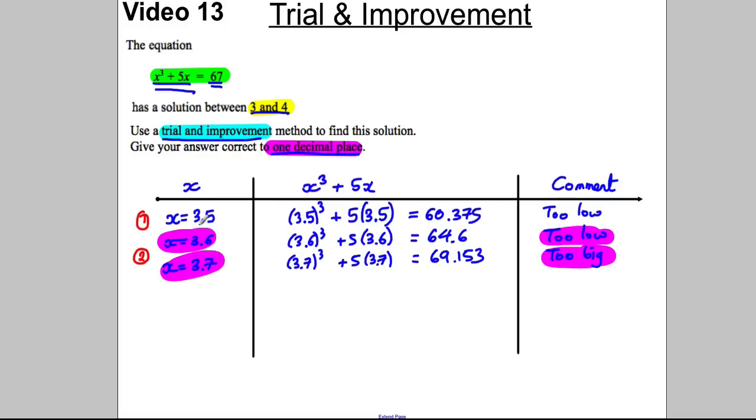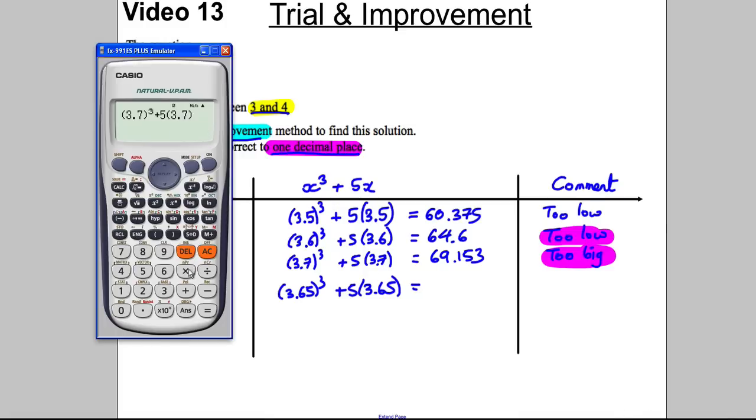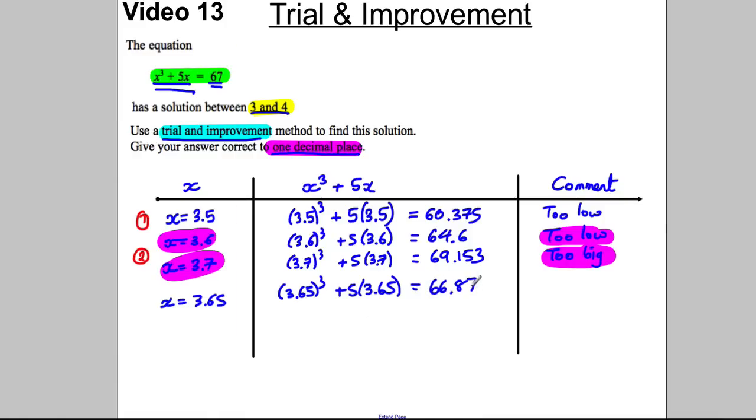So that's our second mark. Now, in order, this is how you have to do it in the exam. You always have to try halfway between these. So you absolutely have to do this. You can't just say that looks like it's closer. You have to try x = halfway between the two numbers you found, so it's 3.65. So you work out 3.65³ + 5 × 3.65 and you work that out. So go back to your calculator, jump back there, change that 7 to a 6.5, go back here, change that 7 to a 6.5 and you get 66.87. Again, that's too small. Okay, so then that is your third mark for trying halfway between the two consecutive decimals you found.